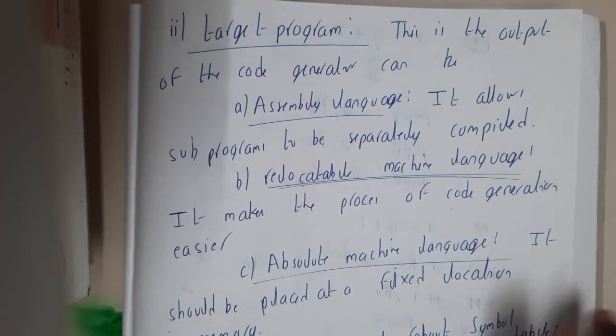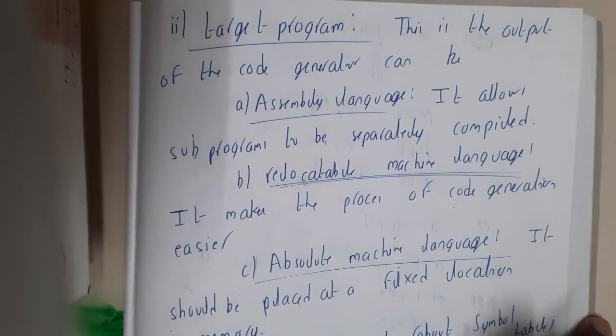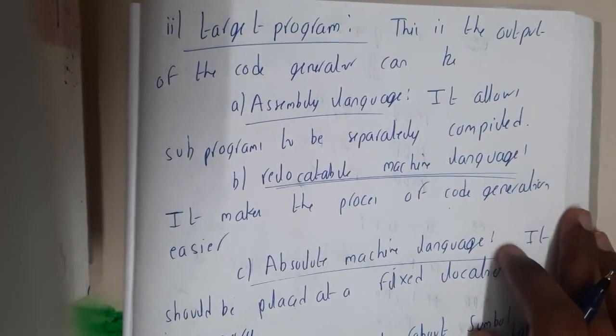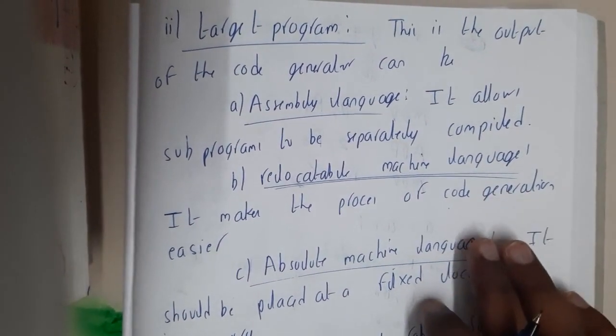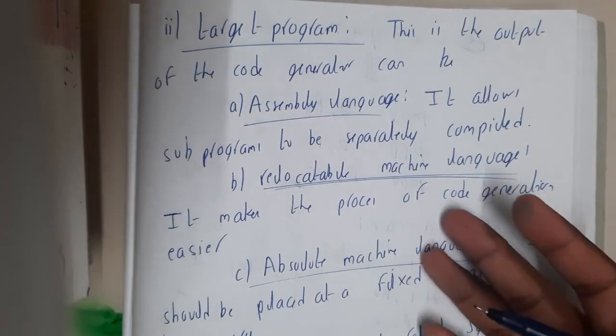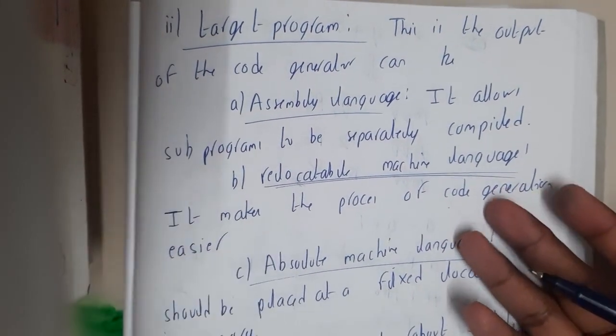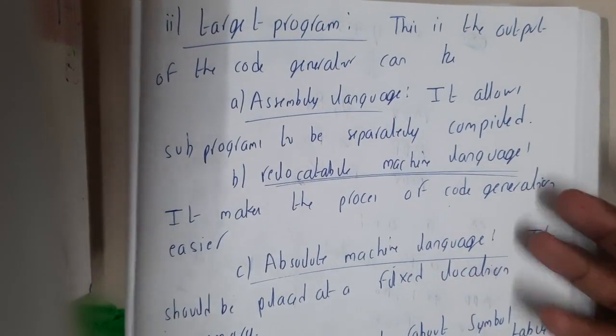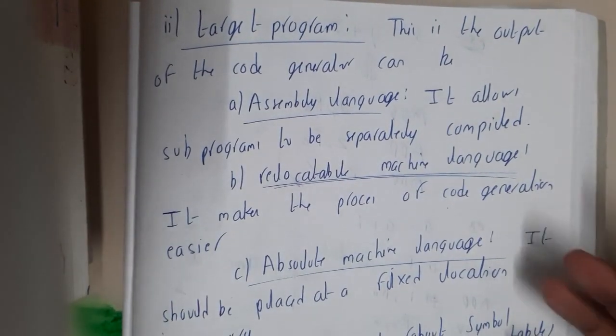The target program is the output of the code generator. The output of the code generator is never fixed. Few compiler designers might require assembly language, few might require machine code, and few might require relocatable machine code. So deciding which output format is really a huge issue.